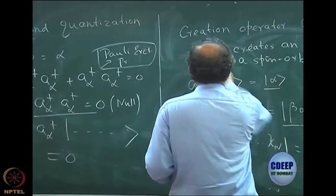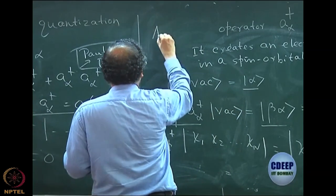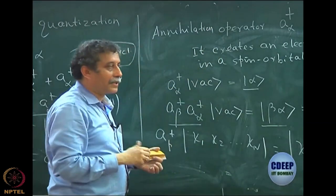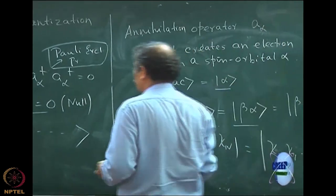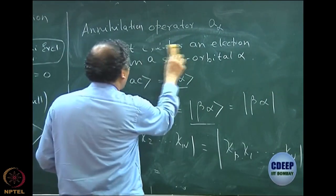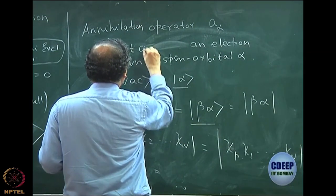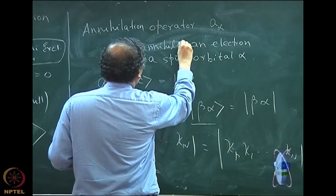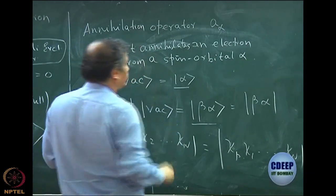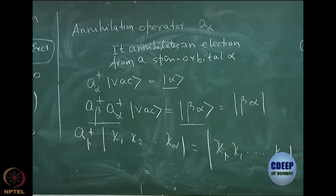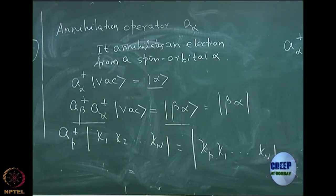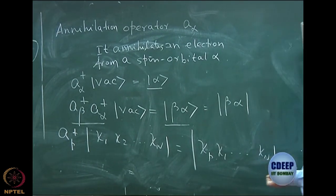Now let me go to the other operator. I told you there are two important operators. The other one is called the annihilation operator — it is just opposite to the creation operator. The annihilation operator is written as just a_α, without the dagger. It annihilates an electron from a spin orbital alpha.